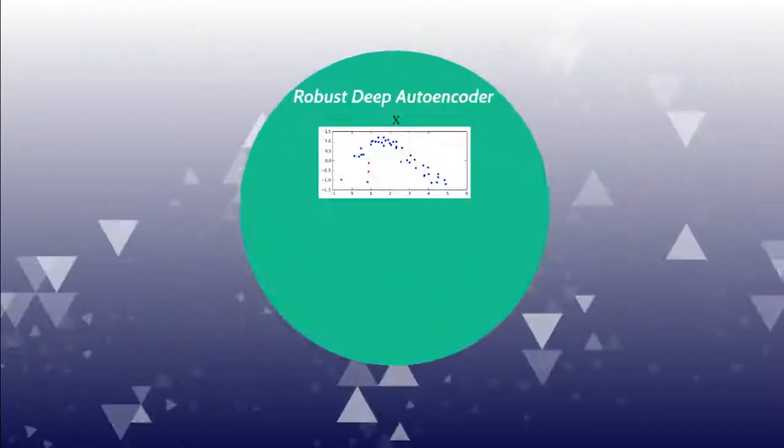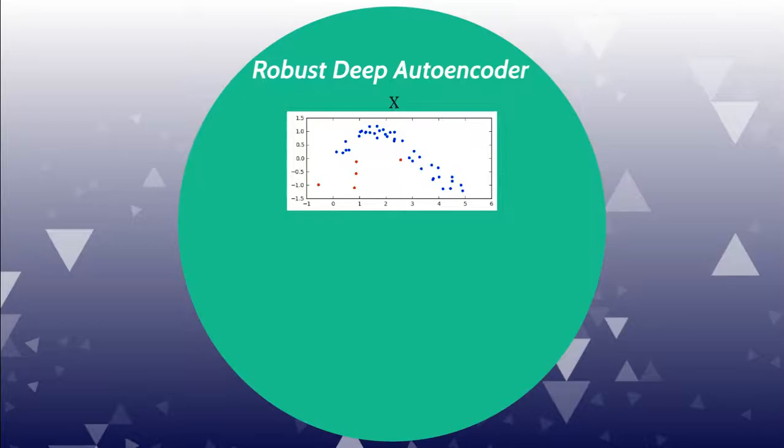Our model, robust deep autoencoder, is a combination of robust PCA and deep autoencoder. It could discover nonlinear manifolds and also detect anomalies.